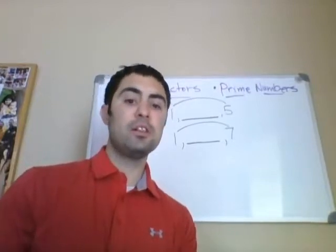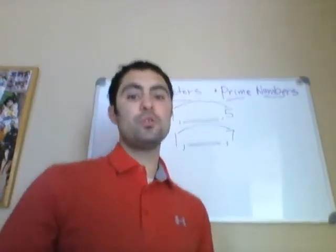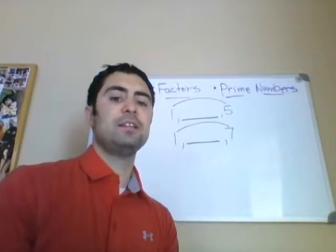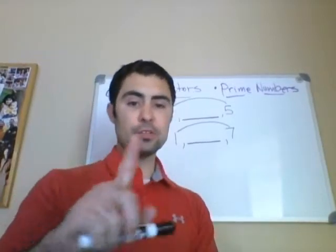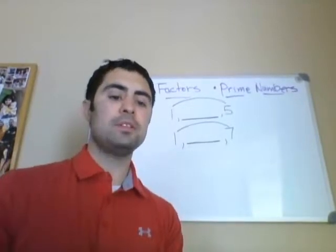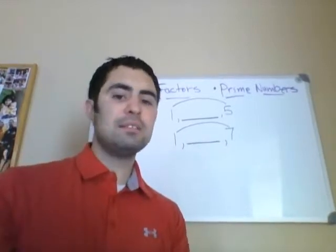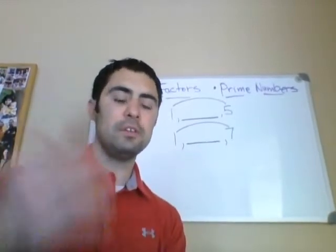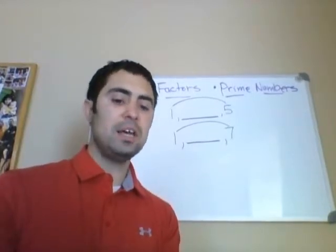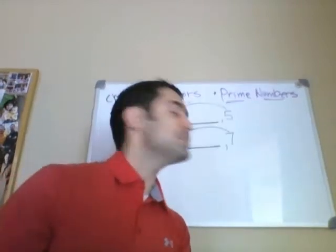The word prime means number one. Primary colors — those are the first colors, the number one colors. Primary school — that's the first school you go to. Prime rib — that's the first part of the rib, or the best. A lot of people use prime to describe something that's the best or the number one ranked. If you were to rank the quality of a certain product from least to greatest, prime would be the best. So you guys are my prime students — the best students.